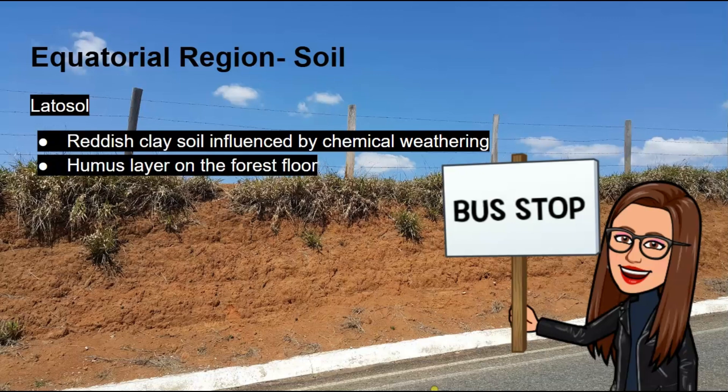In the equatorial region, the soil is called laterite soil — a reddish clay soil influenced by chemical weathering. With the overlying top layer, we have the humus layer on the forest floor. Stay tuned for my video on soils where we will learn lots more about laterite soils.